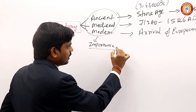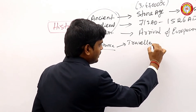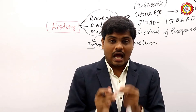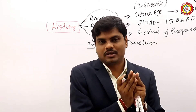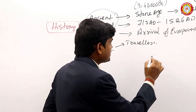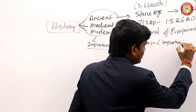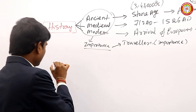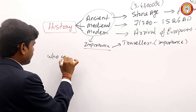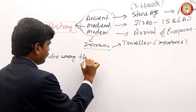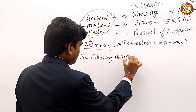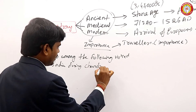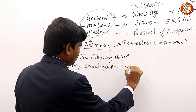For example, there are many travelers who visited India. How can you segregate this chapter? You can segregate it on the basis of importance — during the reign of a prominent king. For instance, take the question: who among the following visited India during Chandragupta Maurya?